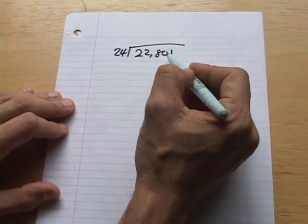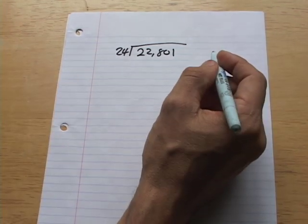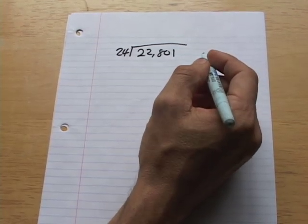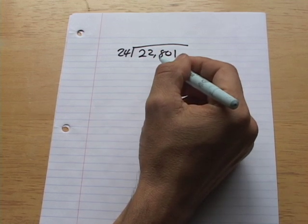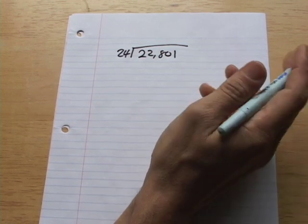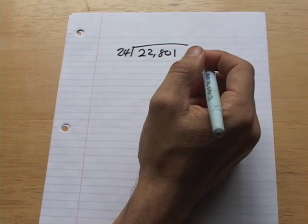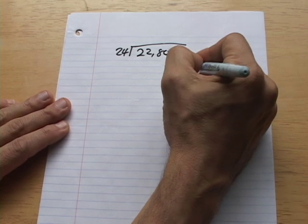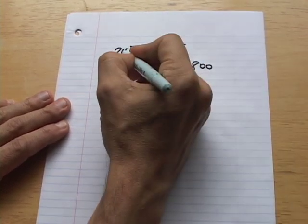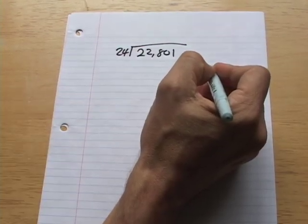How many times do we think that 24 goes into 22,801? Well, 24 goes into 22,000. 24 times 1,000 would be 24,000. So we know it's not 1,000. It's going to be something less. So I'm going to guess, I don't know, 800. So 800 here. I put 800 here. And then I multiply 24 by 800.